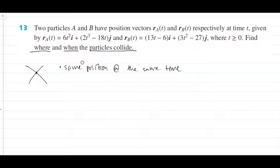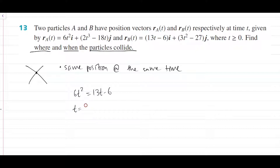The i components have to be the same, and the j components have to be the same, so we equate them to one another. So 6t² equals 13t minus 6 — that's the i component of vector function for particle B. You can put that into your calculator and you should get t equals 2/3 or t equals 3/2. Most of these questions are calculator-based, but sometimes you might get them tech-free as well.